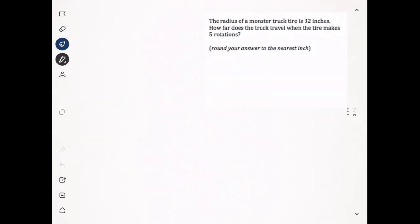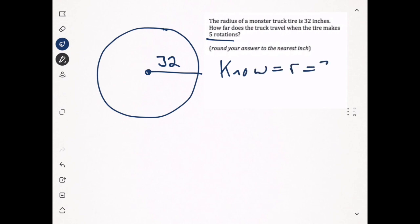Next example: the radius of a monster truck tire is 32 inches. How far does the truck travel when the tire makes five rotations? This time we don't want one rotation, we want five rotations. First, what do we know? We know the radius is equal to 32.